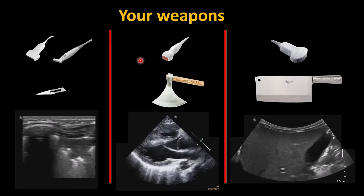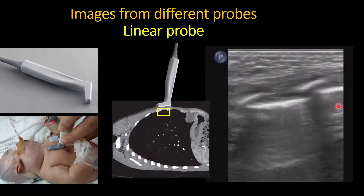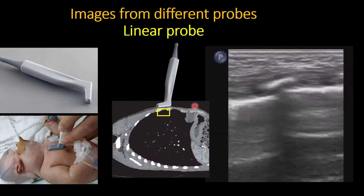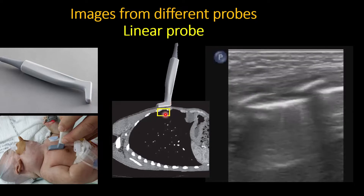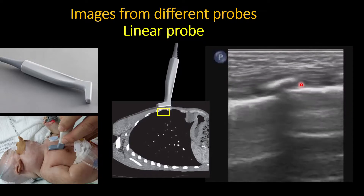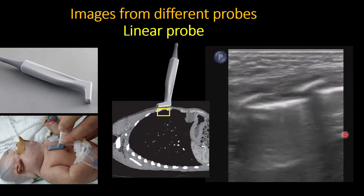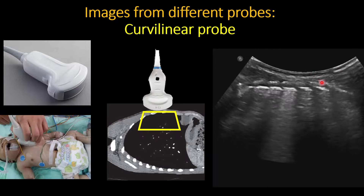We'll now move to lung ultrasound. The two important probes for lung ultrasound are the linear probe and the curvilinear probe. With the linear probe, because it covers a small, superficial area, you can see a small area and superficial structures including the ribs and lung. With the curvilinear probe, the wider footprint allows you to cover a larger, deeper area and see multiple ribs in one image.